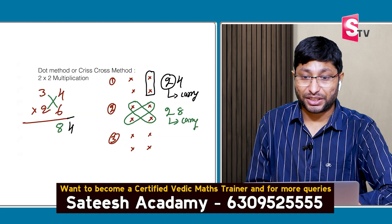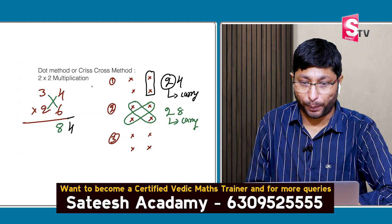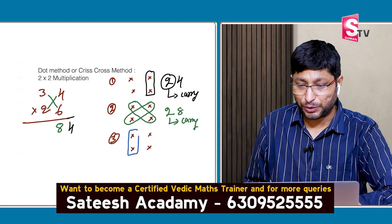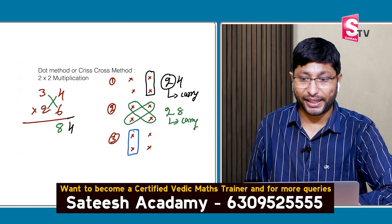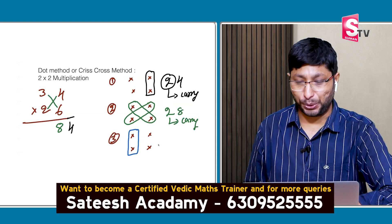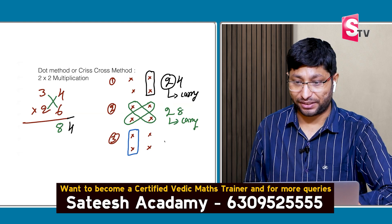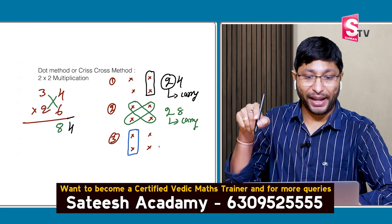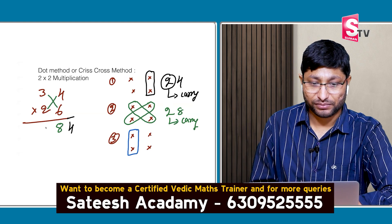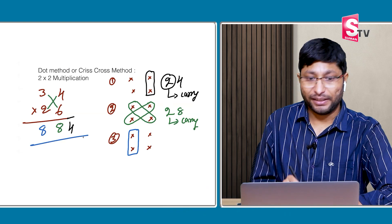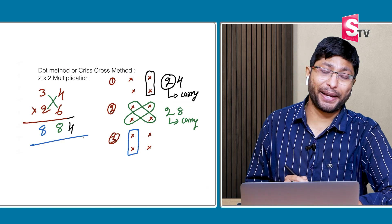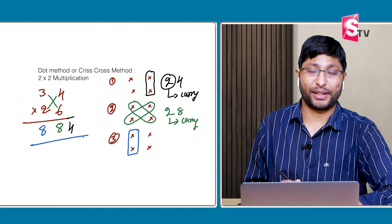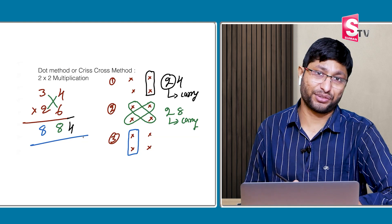Step 3: tens place into tens place. 3 × 2 = 6. Plus 2 carry = 8. The answer is 884.